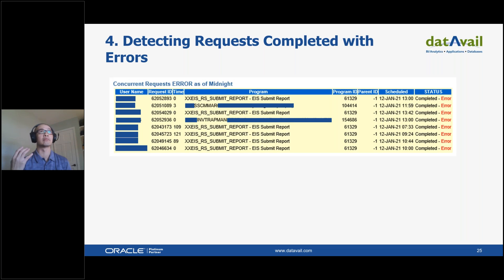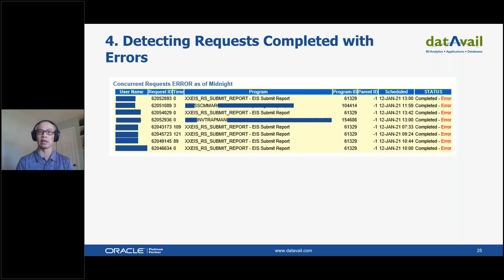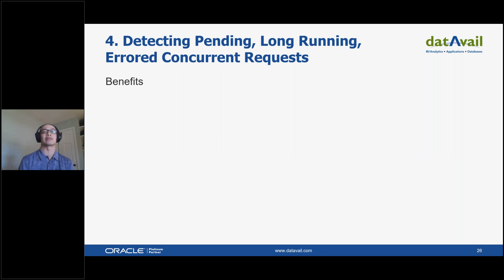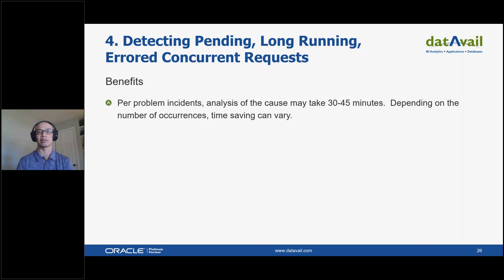Detecting requests that complete with errors is extremely important. As a DBA, if we catch and are aware of issues before the users, then we're doing our job. It would be embarrassing otherwise — we've all been there where the user tells you there's a problem with the system. Benefits: saves time, provides faster resolution, and keeps customers happy.